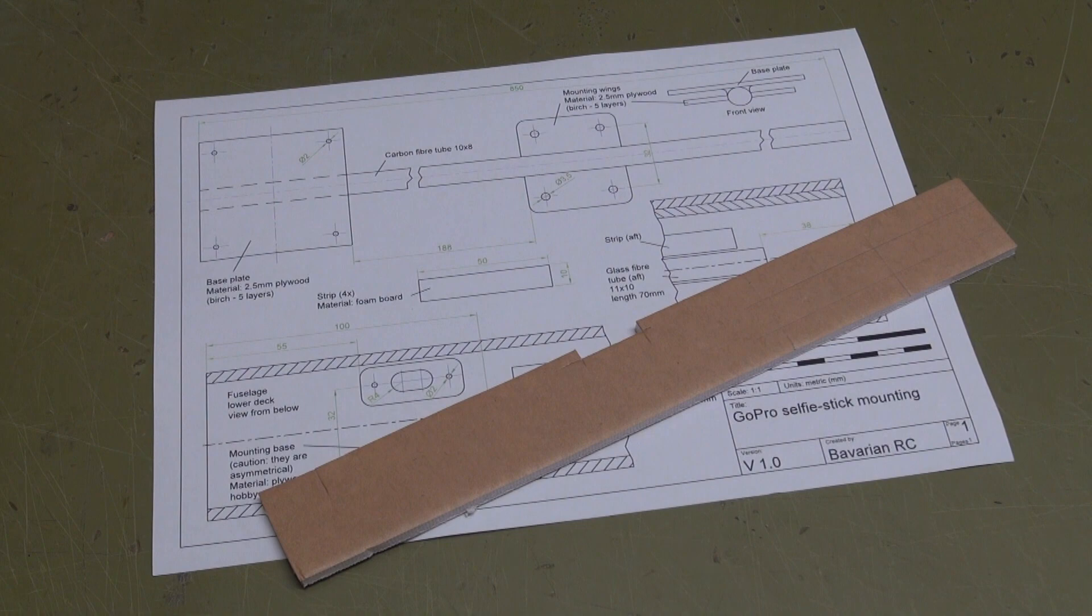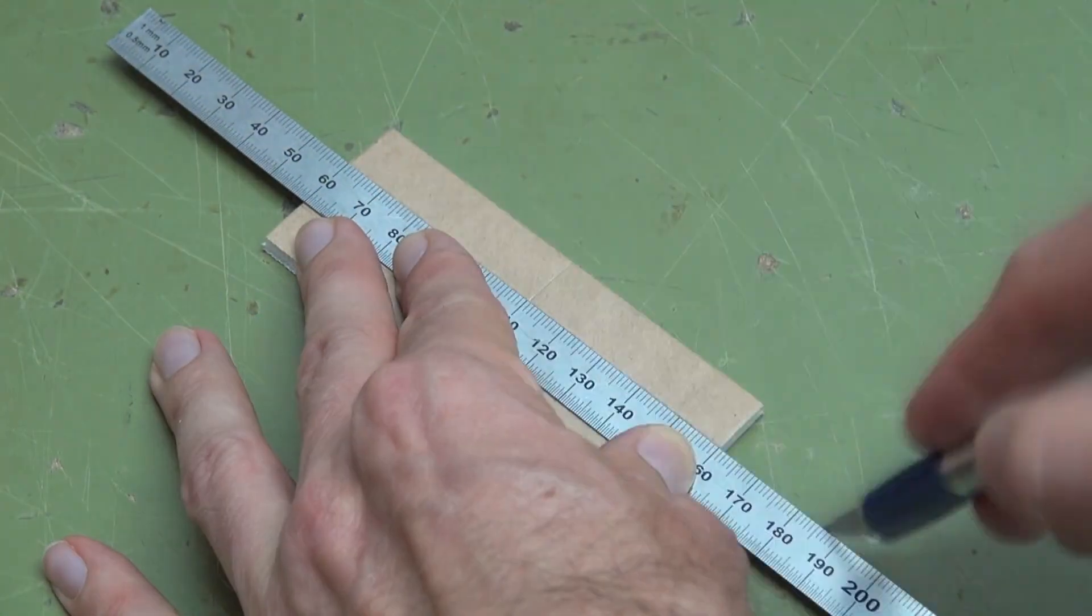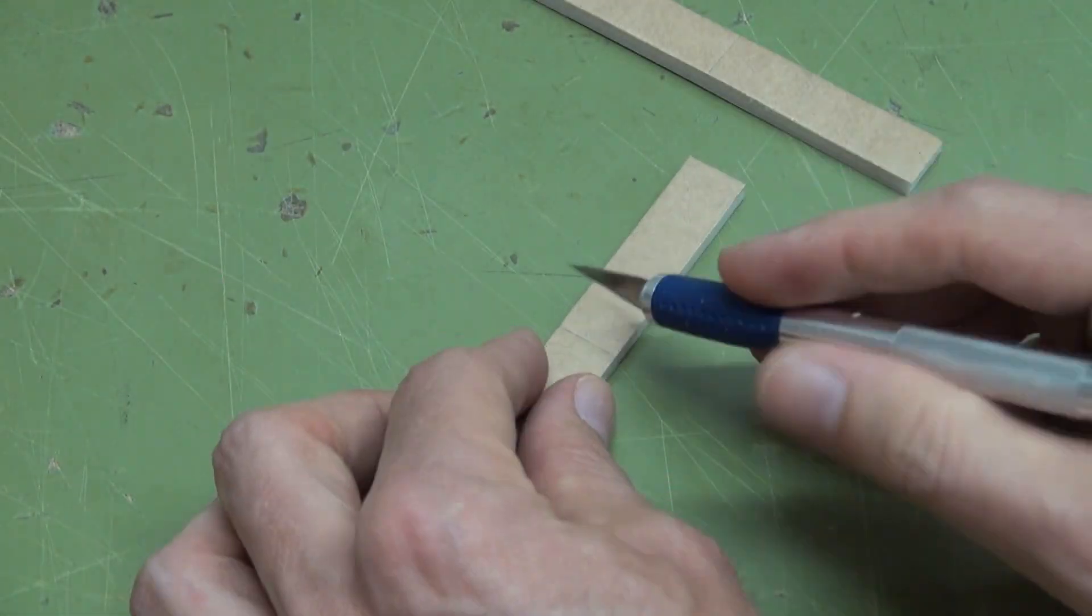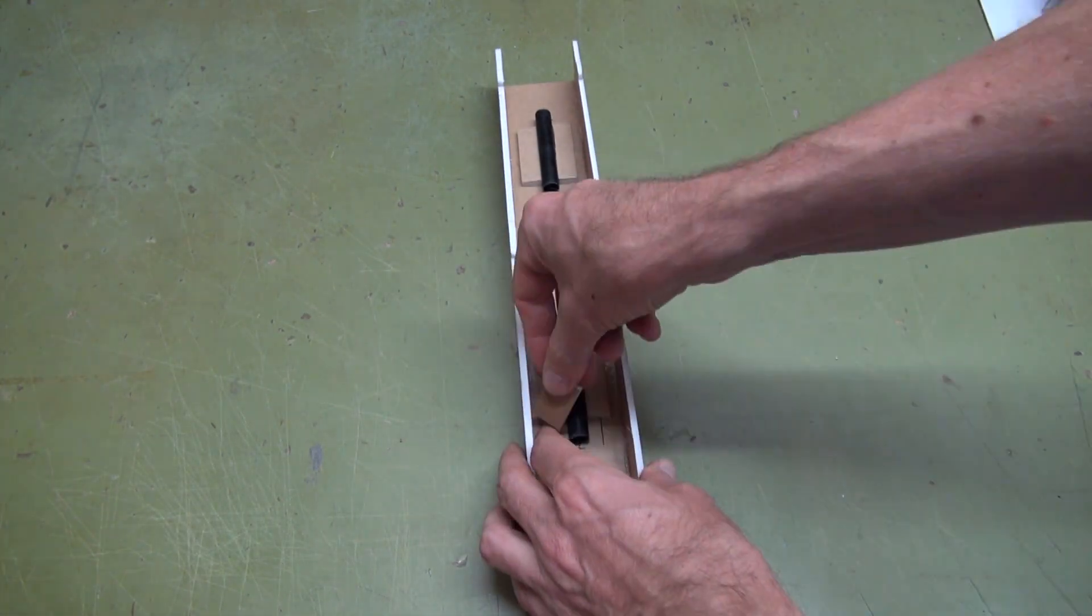Remove the tapes and pull out the tube. You need some foam board material to cut out four strips that serve as a support for the fiberglass tubes. Check the plan for the correct dimensions. Glue a strip to each side of the tubes.